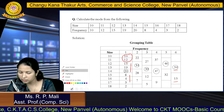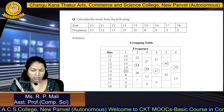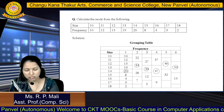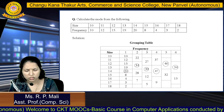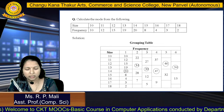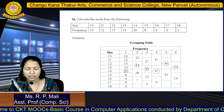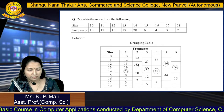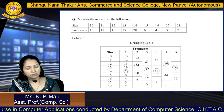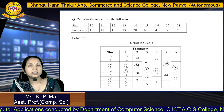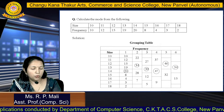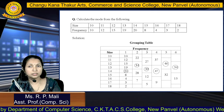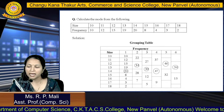After finding all frequency additions, circle the highest frequency in each column. In the first column, 20 is the highest. In the second column, 34 is the highest. In the third column, 39 is the highest. In the fourth column, 47 is the highest. In the fifth column, 46 is the highest. In the sixth column, 54 is the highest frequency. We circle all these and use them for the analysis table.